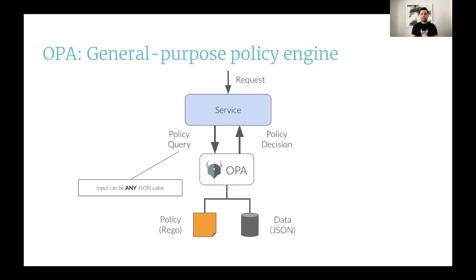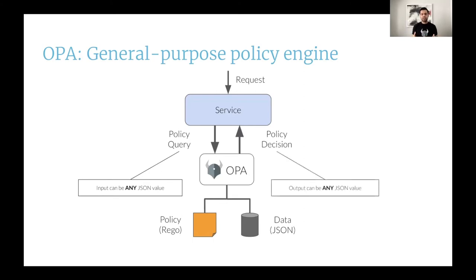The policy query itself can be any JSON value. For example, if you're doing HTTP API authorization, this policy query could contain the request path, the method, the user, and so on. The policy decision itself can also be any JSON value, and then it's up to your service how to interpret that decision.